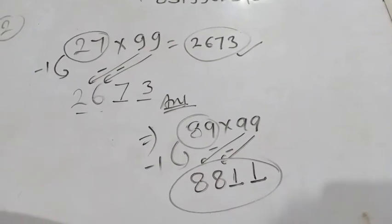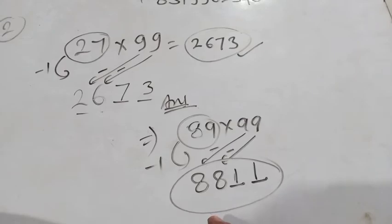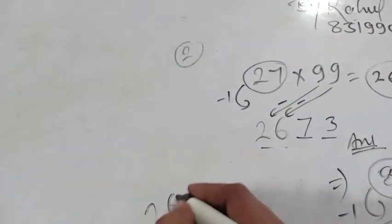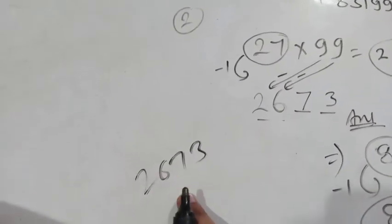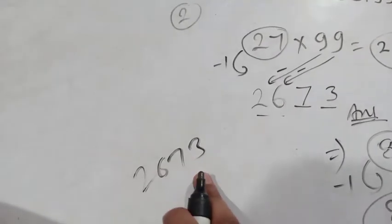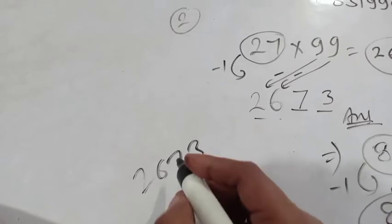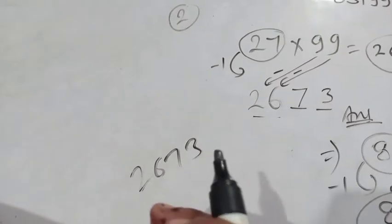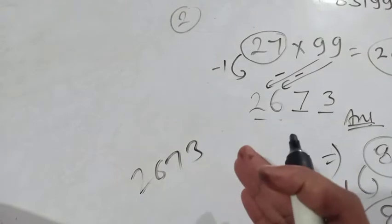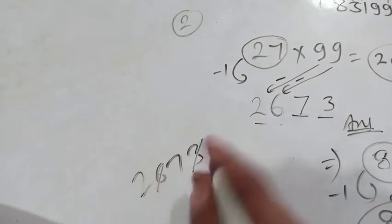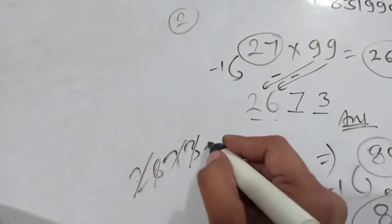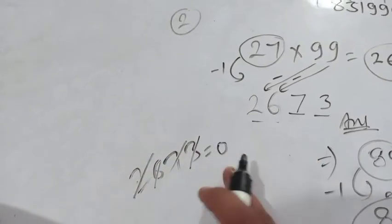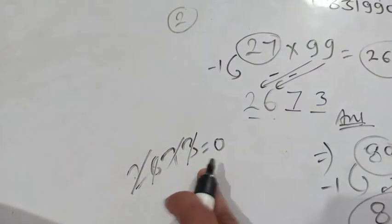If we have to check our answer is right or wrong, we simply take it. 2, 6, 7, 3 is the answer. The whole digit is completely divisible by 9. What we do? We do the sum of all digit. 7 plus 3 become 9. 2 plus 7 become 9. So what will we get? 0. If we get 0, then our answer is correct.